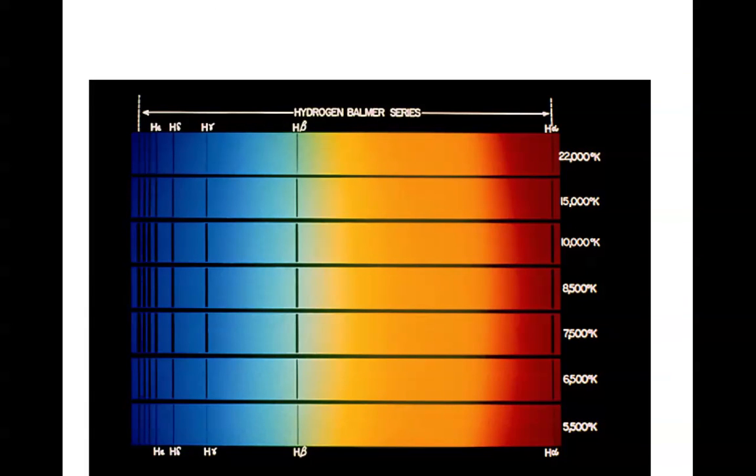Here's an illustration of stars of different temperatures showing the hydrogen part of the spectrum. And you'll notice here that the very cool star has very weak lines. The very hot star has very weak lines. But the stars in between, between say 7,500 and 10,000 degrees, have quite strong lines. So why does this happen?